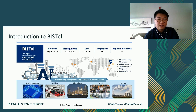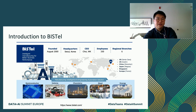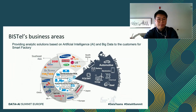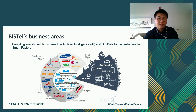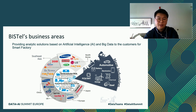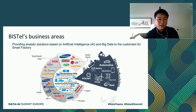Our headquarters is in South Korea, and our R&D Center is in Santa Clara in the US, and our regional sales branches are in Austin, China, Japan, Singapore, and Europe. Visitor provides analytic and automation solutions based on artificial intelligence and big data to all manufacturers. At first, Visitor focused on developing solutions in high-tech manufacturing, such as semiconductor and display. And now, Visitor has tried to expand our business areas into industrial manufacturing, such as automotive, steel, and energy.